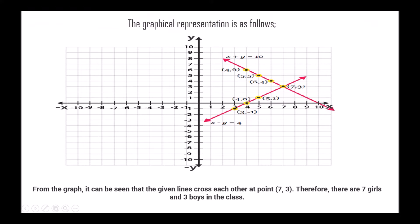This is the graphical representation of the given question. From the above graph, it can be seen that the lines cross each other at point (7, 3). Therefore, there are seven girls and three boys in the class.